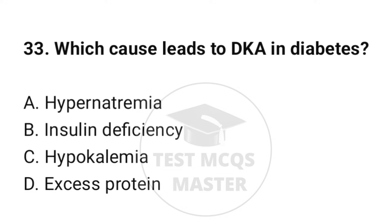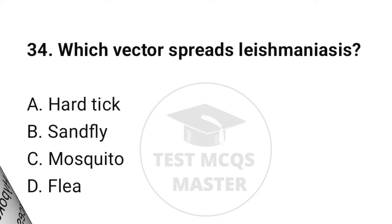Question number 33: Which cause leads to DKA in diabetes? The correct option is B: Insulin deficiency. Question number 34: Which vector spreads leishmaniasis? The correct option is B: Sandfly.